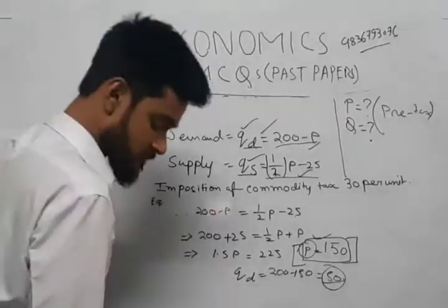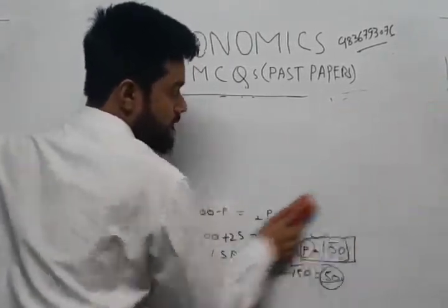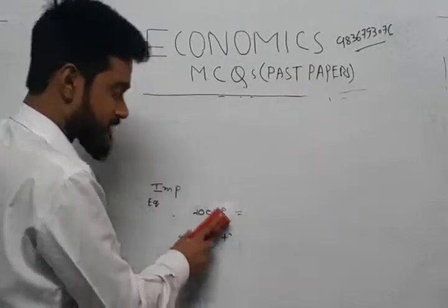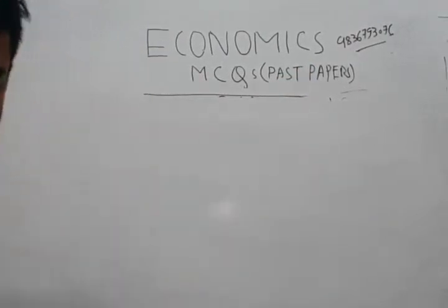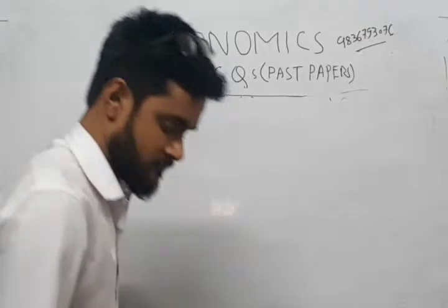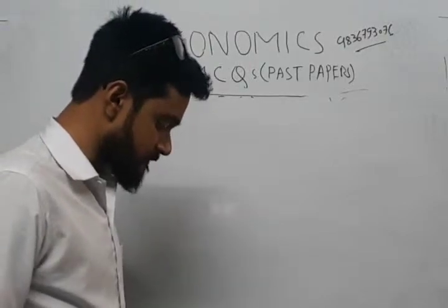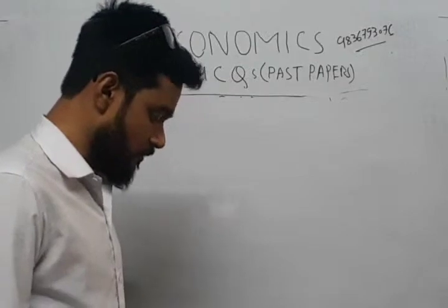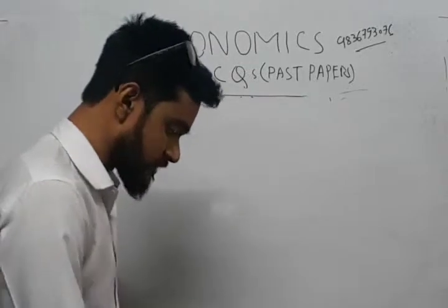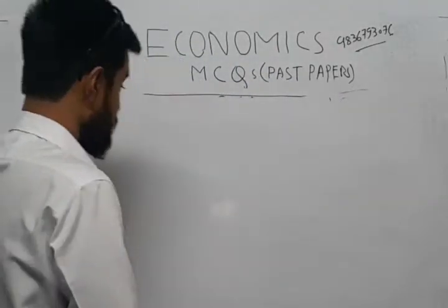If you have any query, WhatsApp me at 9836793076. Now moving to question number two: Ram's total spending on grapes rises when price falls from 2 per kg to 1 per kg. What can we say about the price elasticity of his demand for grapes?